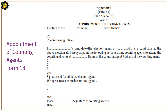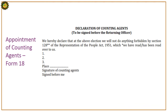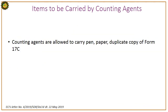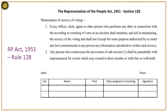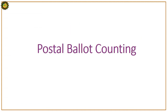Form 18 – the application for appointment of counting agents – is displayed on screen, along with the declaration of counting agents. Counting agents are allowed to carry pen, paper, and a duplicate copy of Form 17C. Before counting starts, everyone present in the counting hall shall take an oath as per Section 128 of the RP Act 1951 regarding maintenance of secrecy of voting.